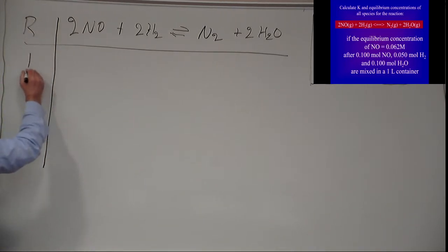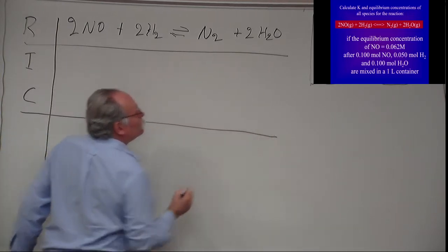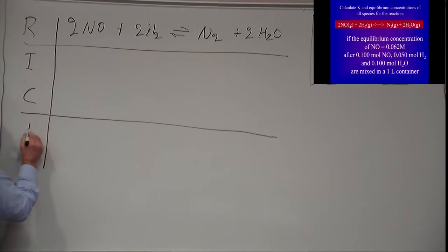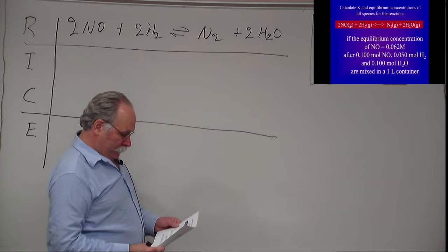So you have the R for the reaction, the I for initial concentrations which in effect is a calculation of Q, then you have the C for changes in concentration as the reaction goes towards equilibria, and finally you have E, once the reaction is over what are the equilibrium concentrations.